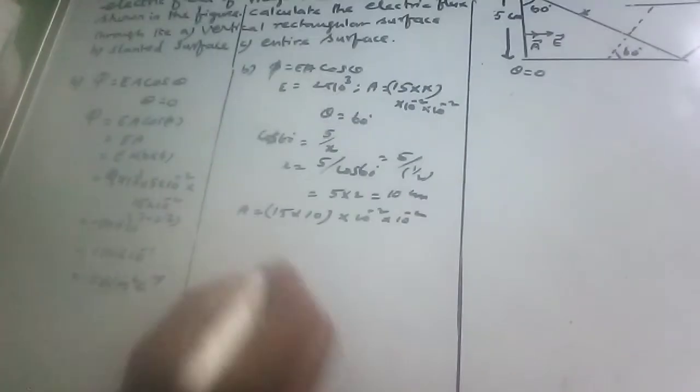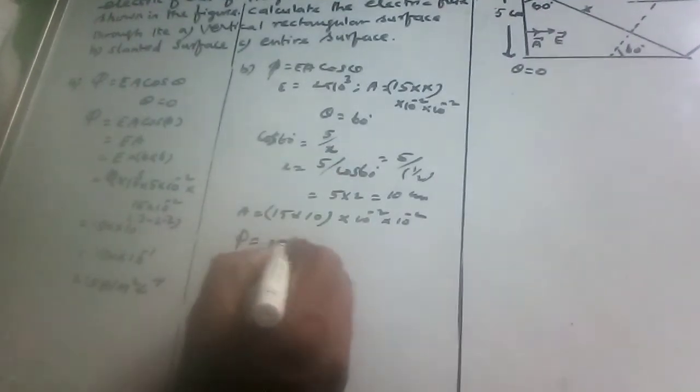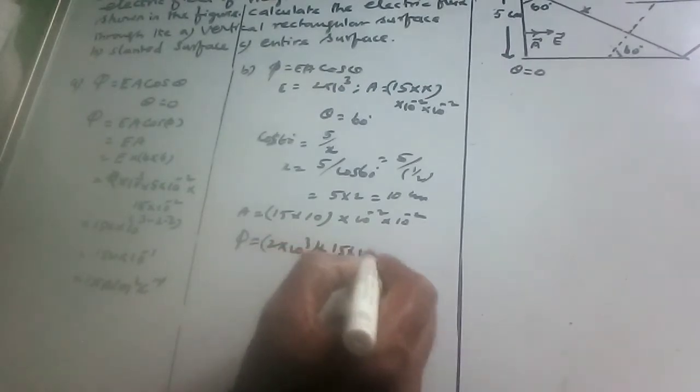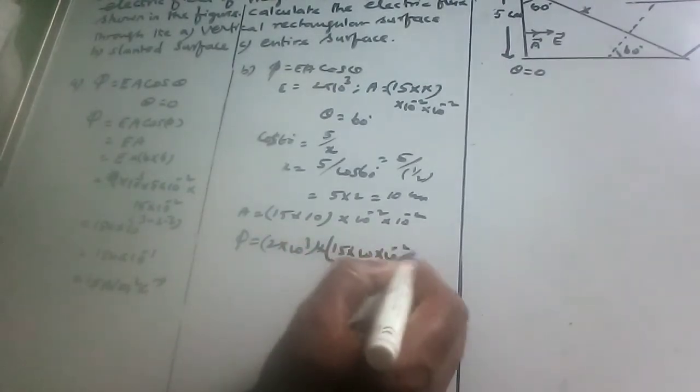To calculate the flux through the slanted surface, phi equal to E value is 2 into 10 power 3. Area is 15 into 10 into 10 power minus 2 into 10 power minus 2.